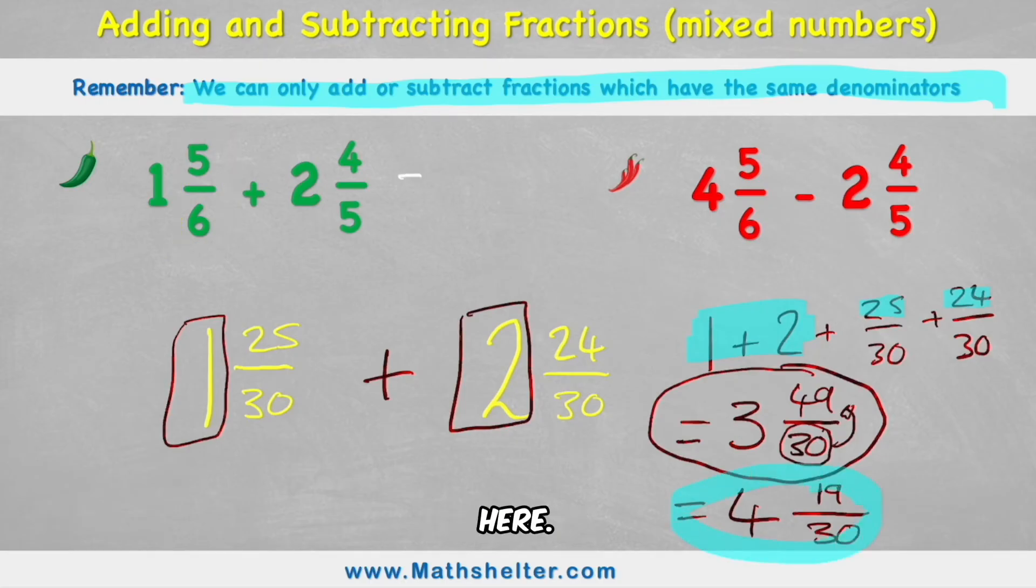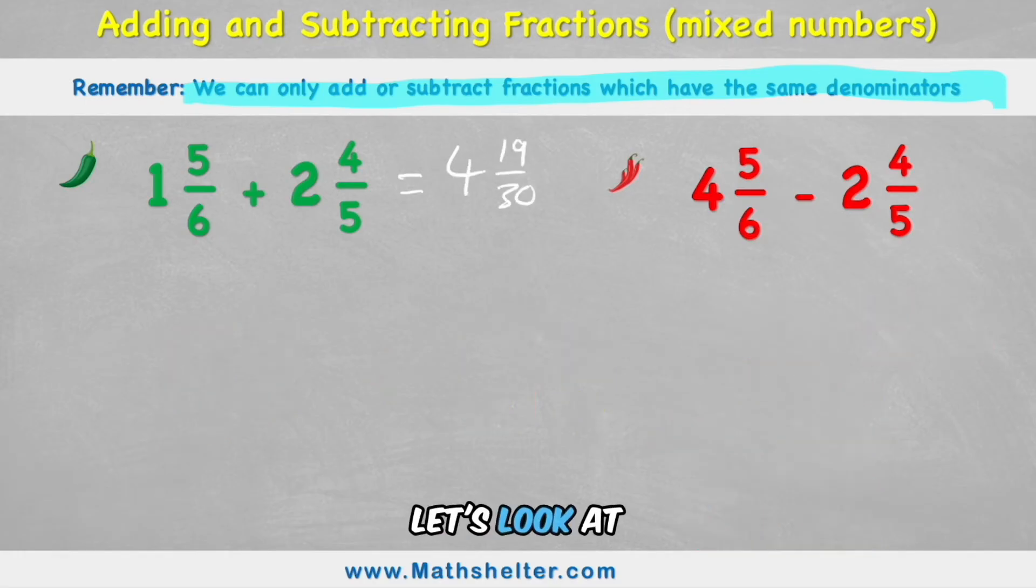So my final answer is 4 and 19 thirtieths. Put that up here. 4 and 19 thirtieths. Okay, let's look at the red chili challenge.